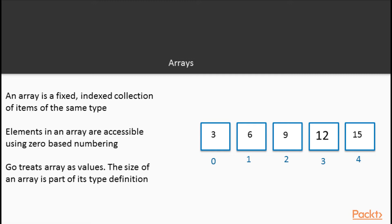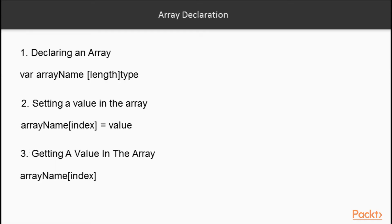We can access and set elements in the array using the respective numeric index. An array's length is the number of elements that the array can hold. In this integer array, we are able to hold five integers. It's important to note that Go treats arrays as values. The size of an array is part of its type definition. Once an array is declared, it is fixed — the array cannot grow and the array cannot shrink.